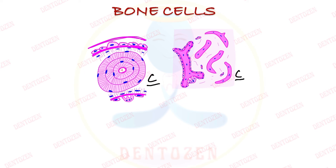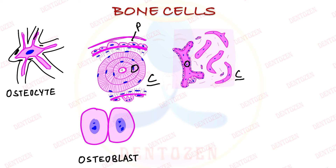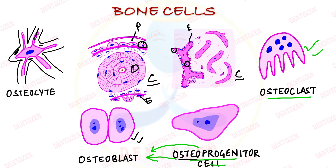On the boundary of these trabeculae we can see all types of cells: osteoblast cells, osteoprogenitor cells, and osteoclast cells (the multinucleated bone-resorbing cells). These are seen in the layers around both compact bone and cancellous or spongy bone. Within the bone, osteocyte cells remain in their lacunae with processes extending into the canaliculi.